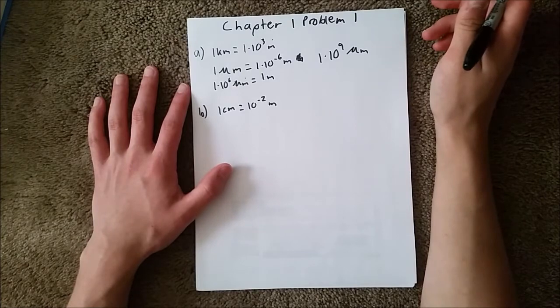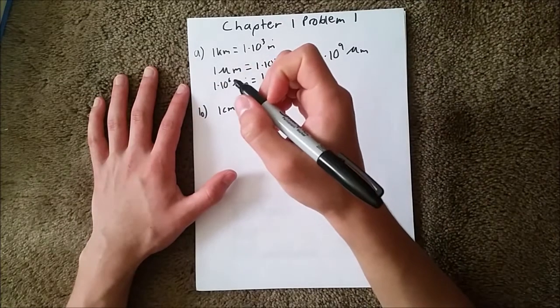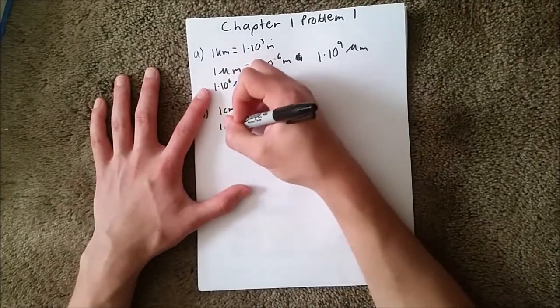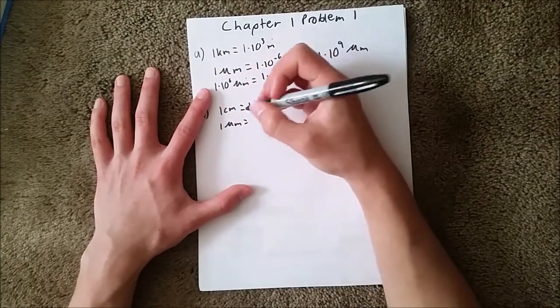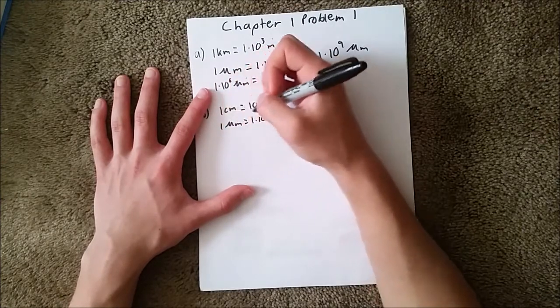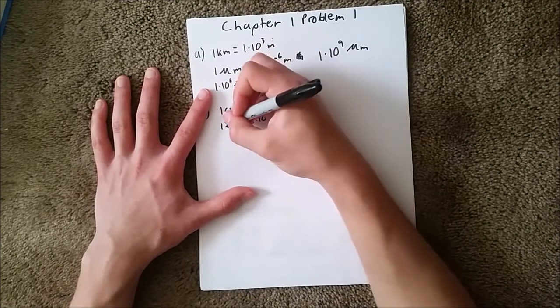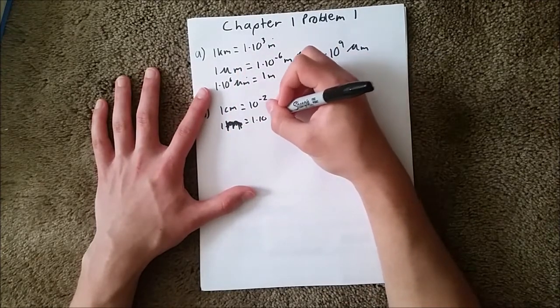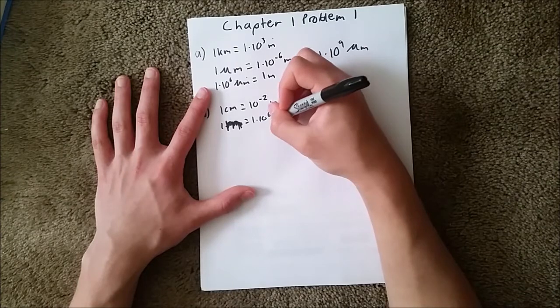And so, we also know that one micrometer is equal to, or sorry, one meter is equal to 1×10⁶ micrometers.